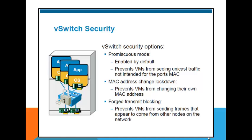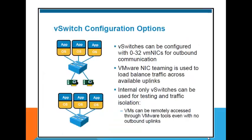Before Nexus 1000V, there are three security features: First, promiscuous mode — traffic intended for a particular destination can only be seen by that destination; no other VMs can see it. For example, if VM1 sends traffic to VM3, only VM3 can see it. Second, MAC address change lockdown — the MAC address cannot be changed. Third, forged transmit blocking — it prevents sending frames that appear to come from another node.